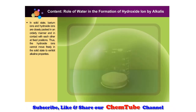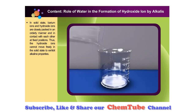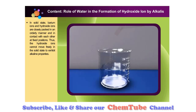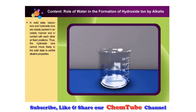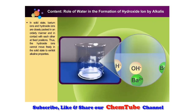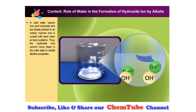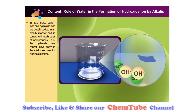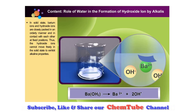When barium hydroxide powder is dissolved in water, it ionizes to produce free-moving barium and hydroxide ions. These free mobile hydroxide ions can exhibit alkaline properties. We can write the equation as shown.